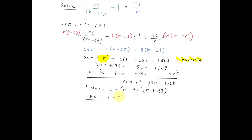We have to set each factor equal to 0. So r minus 56 is equal to 0, or r plus 28 is equal to 0.